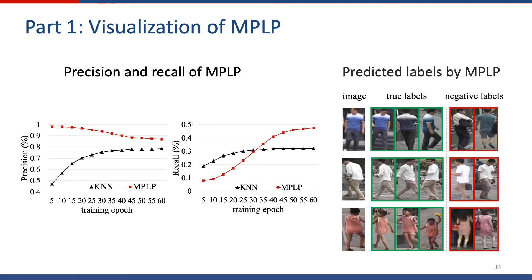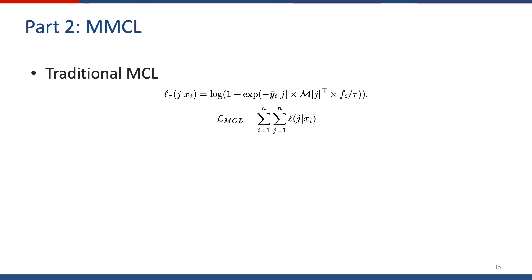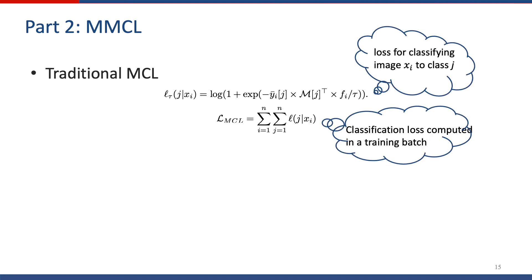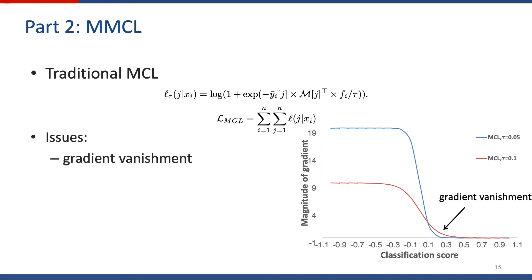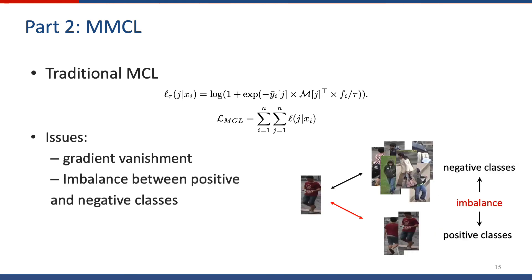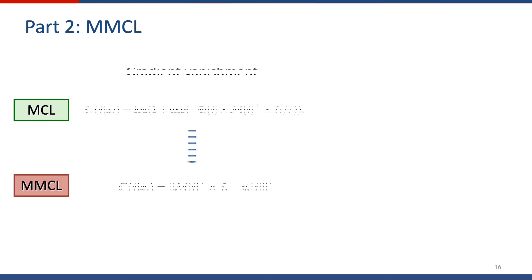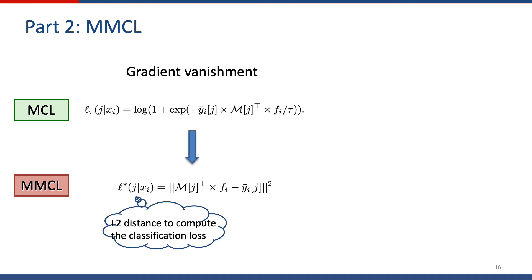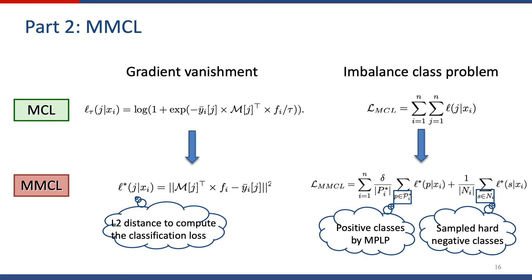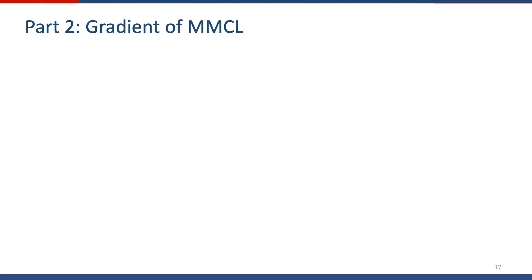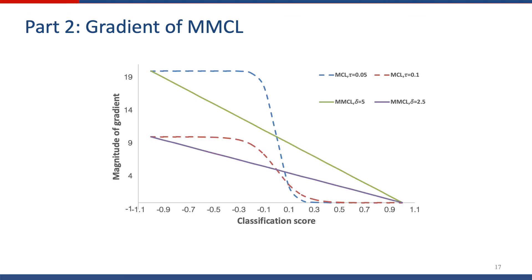Once we get the multi-class labels, we can use multi-label classification loss to train the model. However, traditional MCL has several issues in our setting. First is gradient vanishment, as the figure shows. The next is imbalance between positive and negative classes, since one image may have a few similar images but thousands of dissimilar images. So we propose MMCL: we use L2 distance to compute the loss to solve gradient vanishment. To address the imbalance problem, we propose hard negative class mining to select a subset of negative classes for loss computation. We plot the gradient of two multi-label classification losses, and we can observe that the gradient vanishment issue is addressed by MMCL.